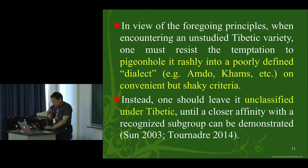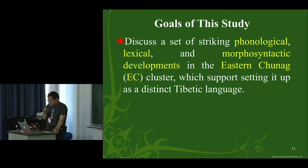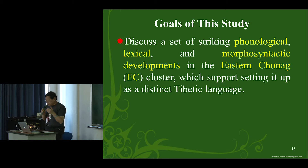With those methodological reminders in mind, the goals of this study are: first, to discuss a set of striking phonological, lexical, and morphosyntactic developments in one of the seven Tibetan lects — Eastern Chuna, that's the local pronunciation — or EC cluster, which supports setting it up as a distinct Tibetan language.